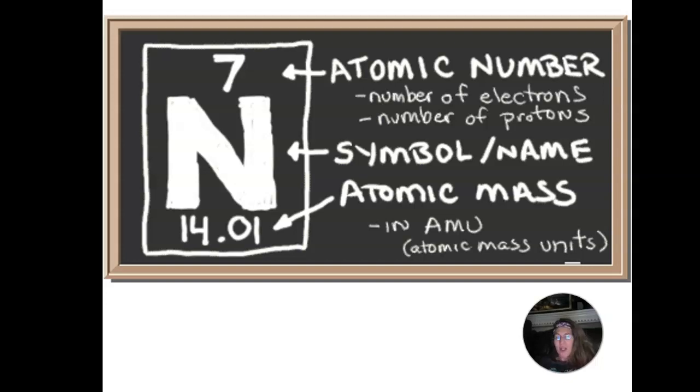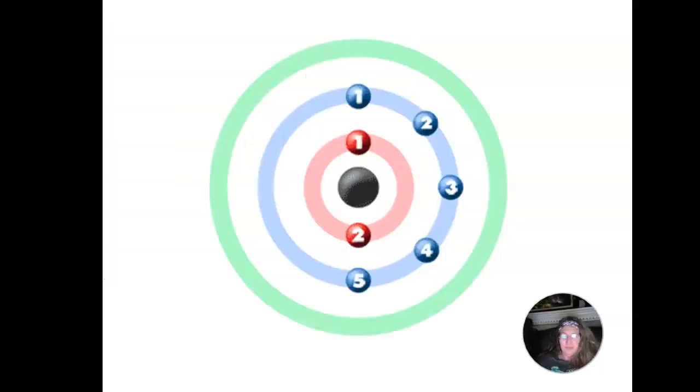Here is nitrogen, and so we know that it has seven protons. And so if it has seven protons, we know it has seven electrons. Where those electrons end up being are going to determine how the nitrogen is going to react.